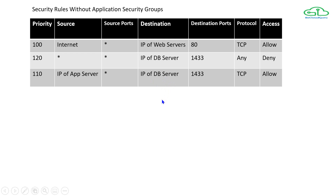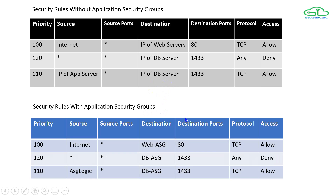Now let's look at what changes application security groups bring. In a snapshot of NSG rules using application security groups: if I am allowing traffic from the internet on port 80 and I put the destination as a web application security group, I don't need to put the IP address of my web server. If the web server's IP changes, I just need to associate that NIC to the application security group — no changes needed in the security rules. When adding more servers, I just add them to the web application security group and the rule applies automatically.